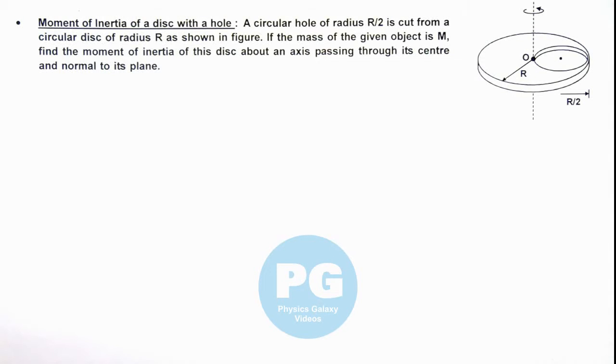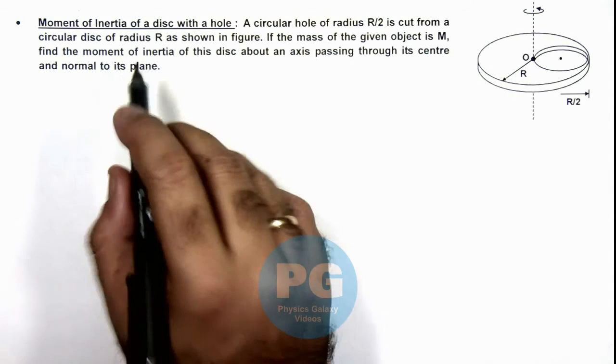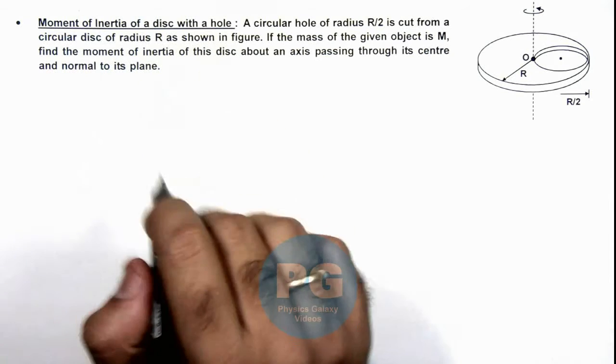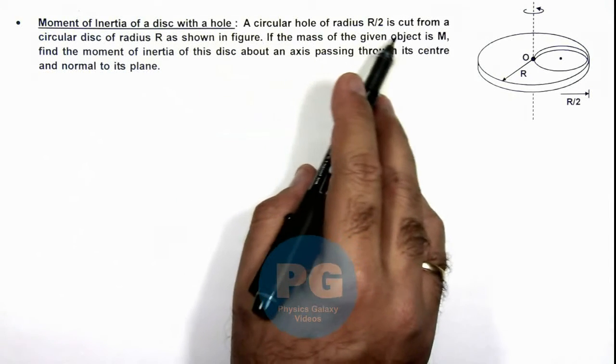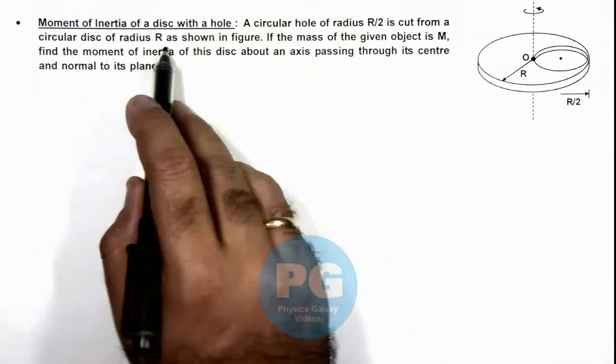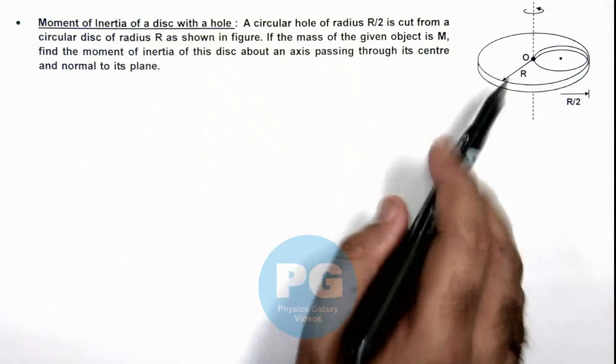In this illustration, we'll calculate the moment of inertia of a disc with a hole. Here we are given that a circular hole of radius R/2 is cut from a circular disc of radius R, which we can see here.